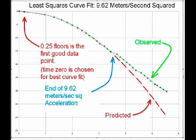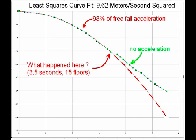If the building accelerates less, there must be more upward force. If the building falls at a constant velocity, then there is only a tiny bit less upward force than necessary to hold it up. Thus, after three seconds, our graph shows a large amount of force opposing the fall of Building 7. The only explanation is that the supporting structure of several floors was destroyed simultaneously.